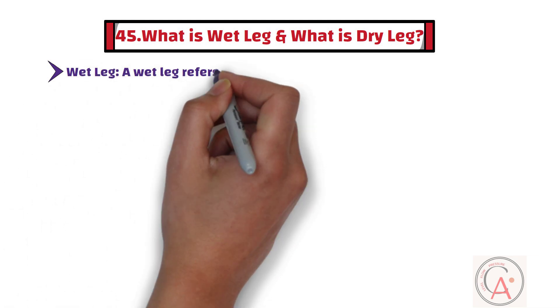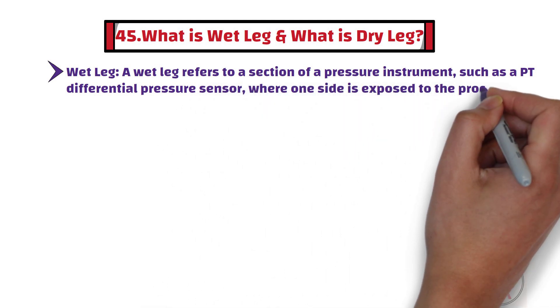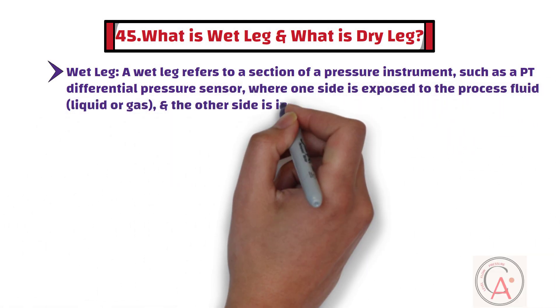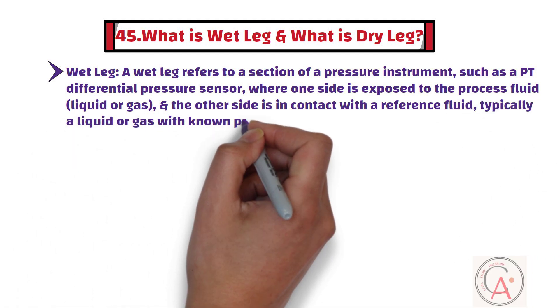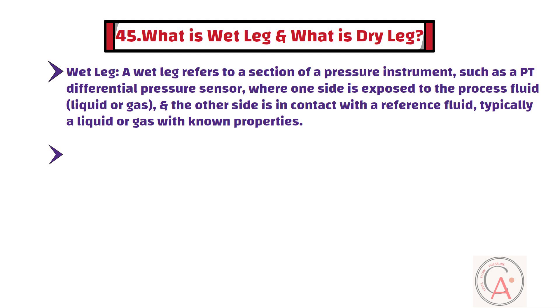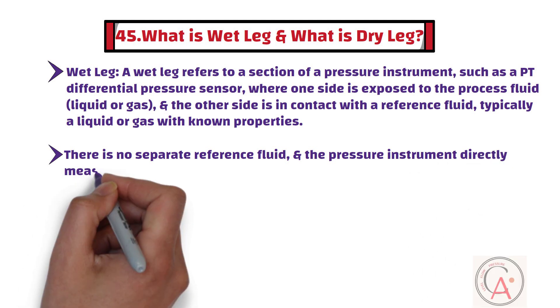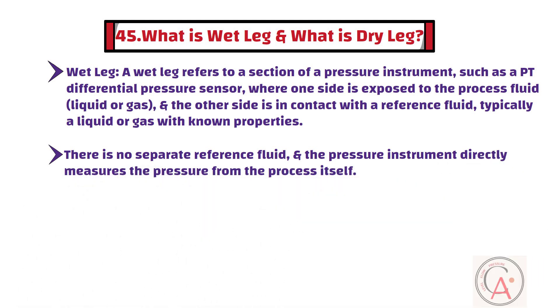Question 45: What is a wet leg and what is a dry leg? A wet leg refers to a section of a pressure instrument — such as a pressure transmitter or differential pressure sensor — where one side is exposed to the process fluid and the other side is in contact with a reference fluid, typically a liquid or gas with known properties. In a dry leg setup, there is no separate reference fluid, and the pressure instrument directly measures the pressure from the process itself. Dry leg configurations are commonly used where it is not practical or necessary to use a separate reference fluid.